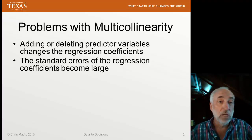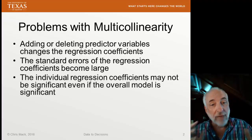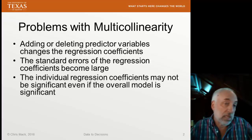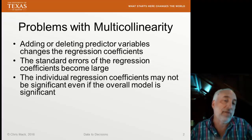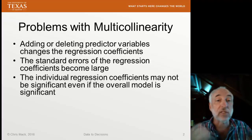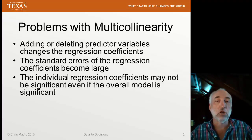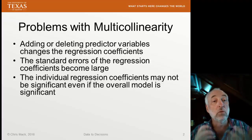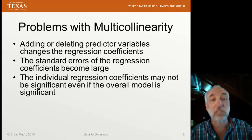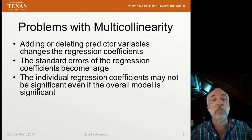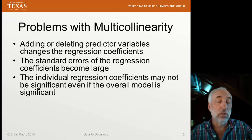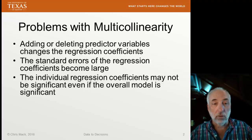The standard errors may even encompass zero. So it's possible that you'll have a model that is significant — it passes the F-test, obviously fitting the data, you can see that just by looking at it — and at the same time, every individual regression coefficient will be labeled as not statistically significant because its confidence intervals include zero.